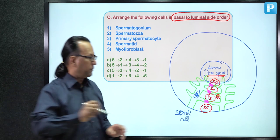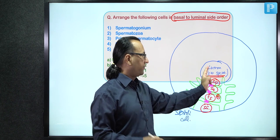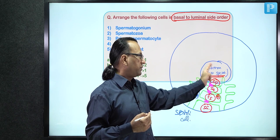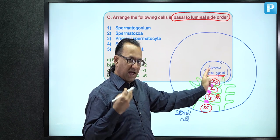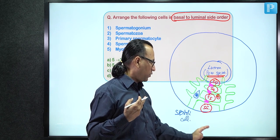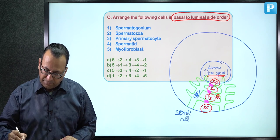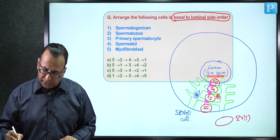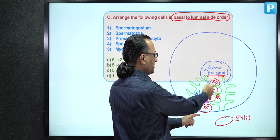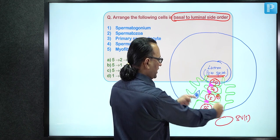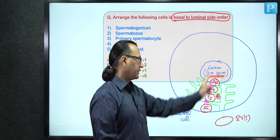Sertoli cells hold tight junctions with neighboring Sertoli cells, creating the blood-testis barrier. Spermatogenesis begins after puberty, so sperms are like foreign bodies to blood cells which were never trained to treat them as self. The blood-testis barrier prevents blood components from reaching developing sperms, while allowing germ cells to move toward the lumen.